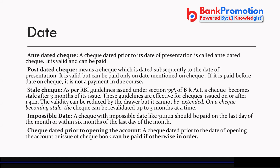For impossible dates like '31st November' — since November has only 30 days — the nearest valid date, i.e., 30th November (the last day of that month), within six months, would be treated as the intended date. The customer likely meant the month-end. If the impossible date is completely underivable, you can reject it; otherwise, like 31st November, you can process it as 30th November.